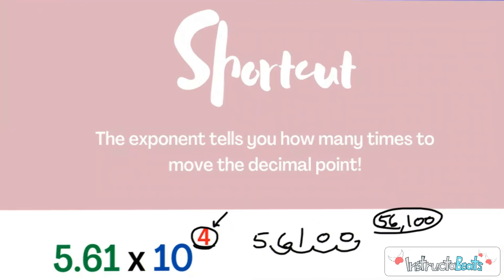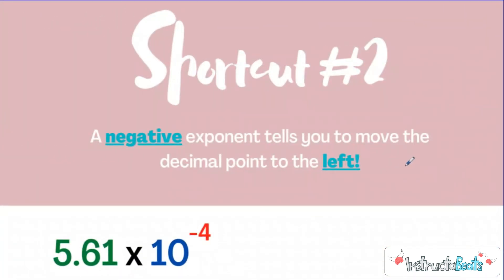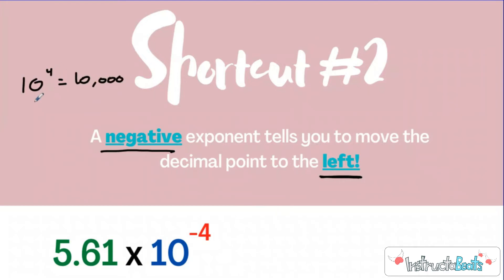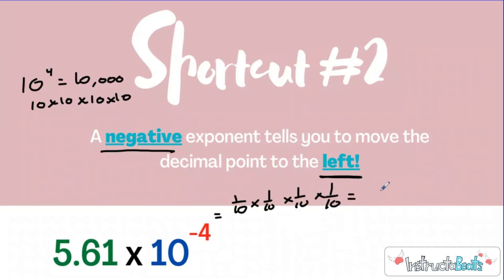Let's take a look at our shortcut for this lesson, which goes back to our negative exponent rule. A negative exponent is going to tell you to move the decimal point to the left. Last lesson, all our exponents were positive, which means we were multiplying by large numbers — 100, 1,000, 10,000, even a billion. But 10 to the negative fourth power really equals 1 tenth times 1 tenth times 1 tenth times 1 tenth, which is really multiplying by 1 ten-thousandth — the same thing as dividing by 10,000. So we're going to be making a smaller number.